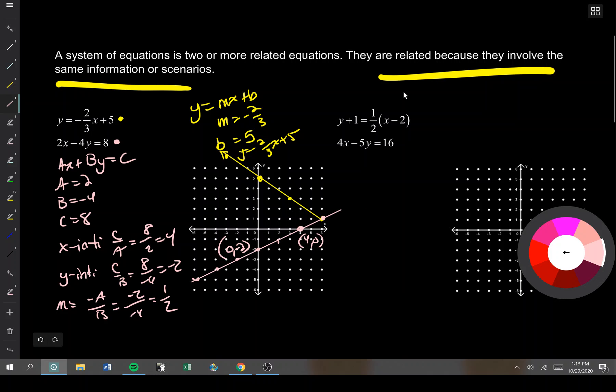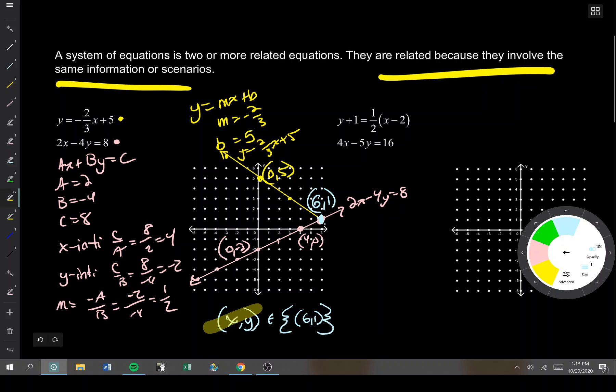These two lines are crossing at 6, 1. So this point of intersection right here, this is the point 6, 1. That is the point that is going to solve my system. That means that is the one point that works in both equations. That's what you're looking for. So my solution is going to say x comma y is 6, 1. That is how you should be writing your solutions.